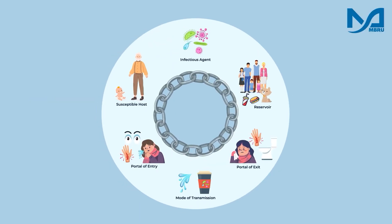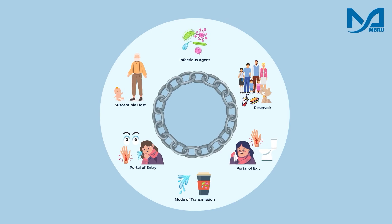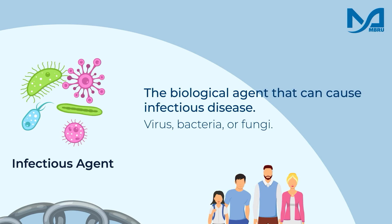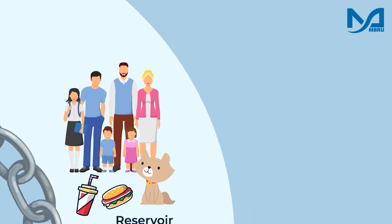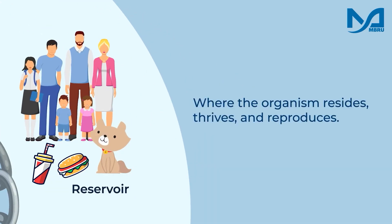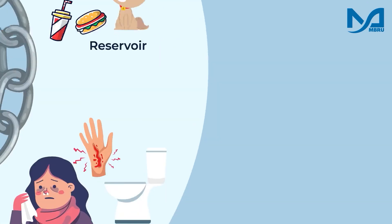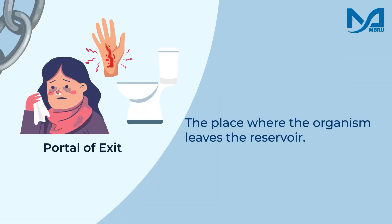In order for an infection or disease to happen, six elements must be in place. This process is known as the chain of infection. The first element in the chain is an infectious agent, which can cause a disease — it could be a virus, bacteria, or fungi. The second element is the reservoir, or the place where the infectious agent lives. It can be a person, an animal, soil, food, water, etc.